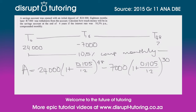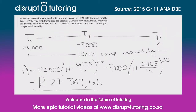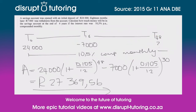We're going to plug all of that into our calculator very carefully and we'll be left with a final answer of R27,369.56.